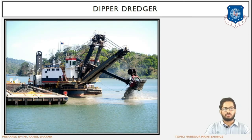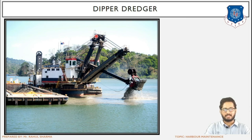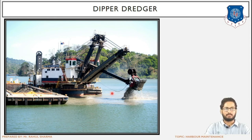This is the view of the dipper dredger. This is the bucket excavating the deposits, this is the dipper stick which is perpendicular, these are the hoisting cables, and next is the boom which determines alignment and direction. The excavated material is deposited in a container.